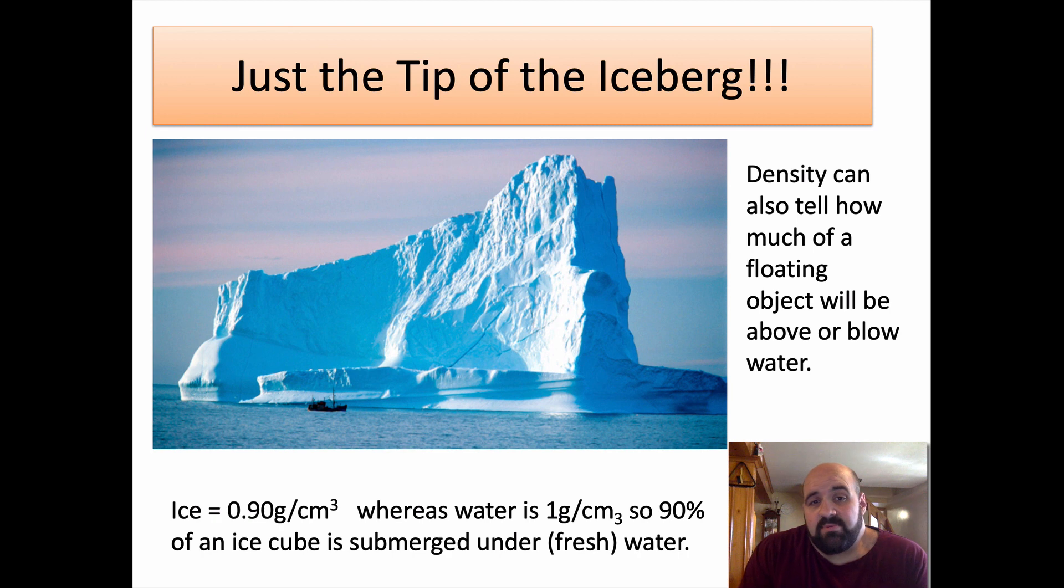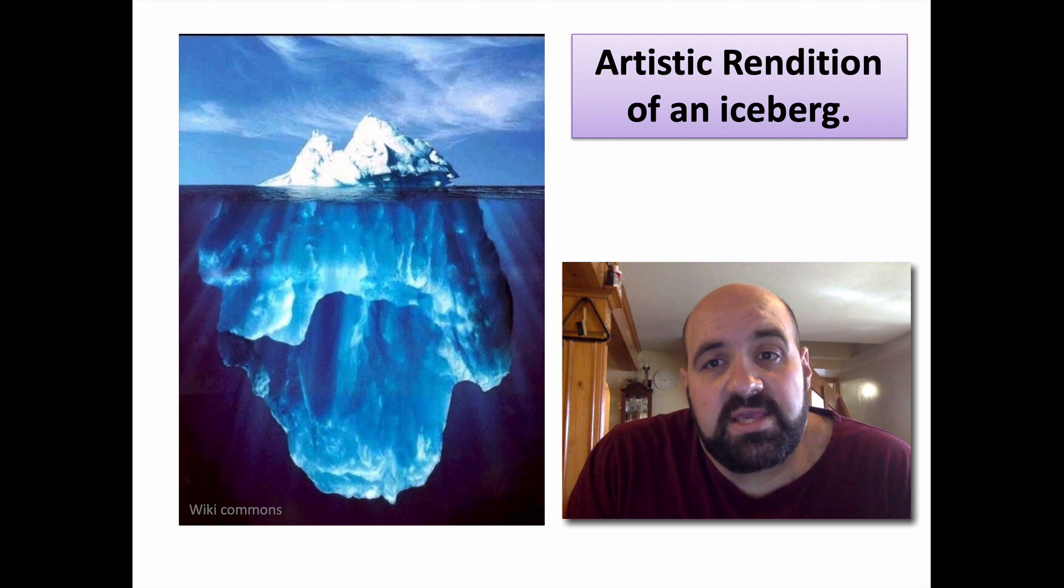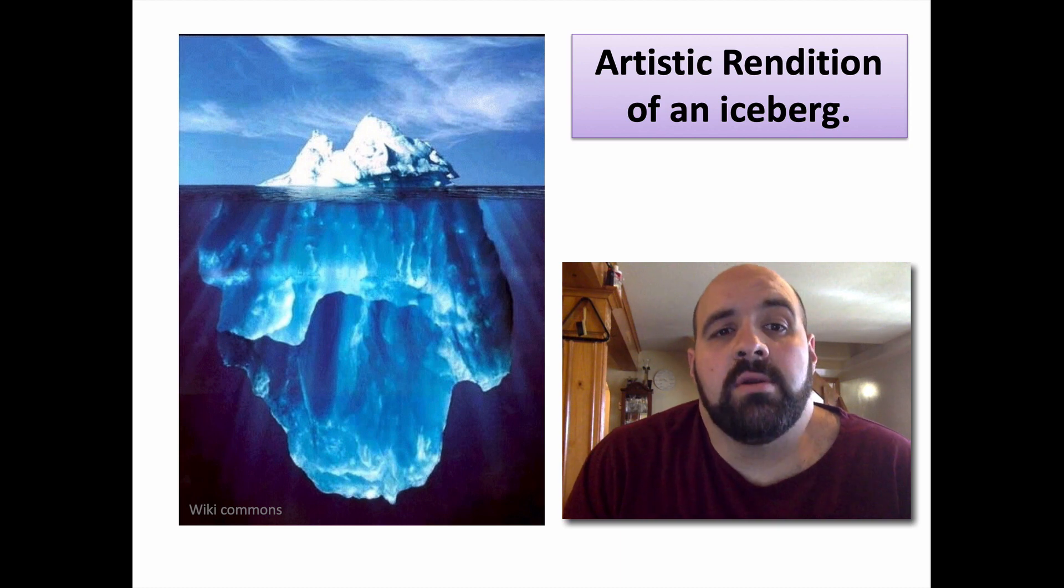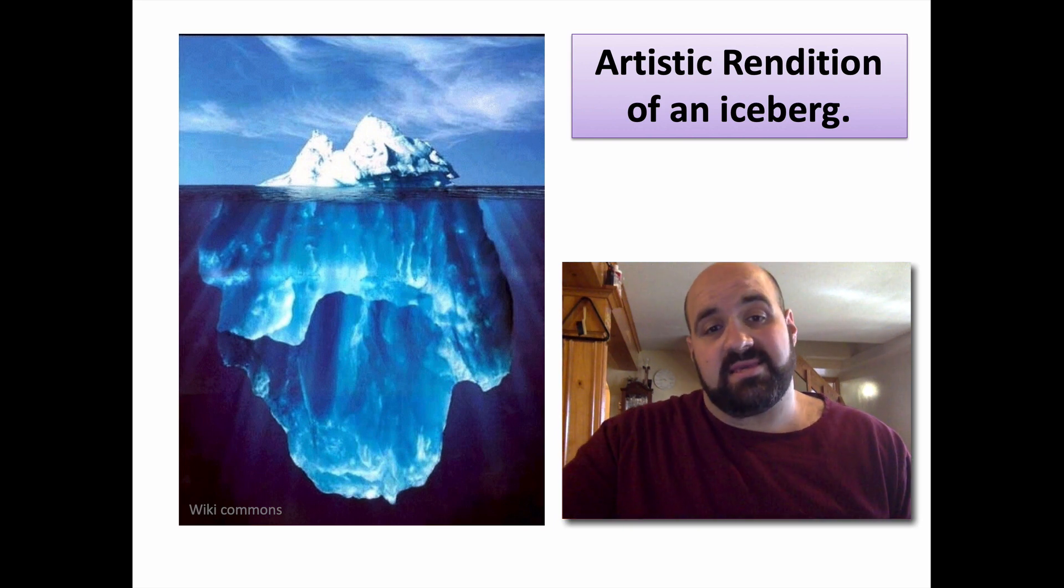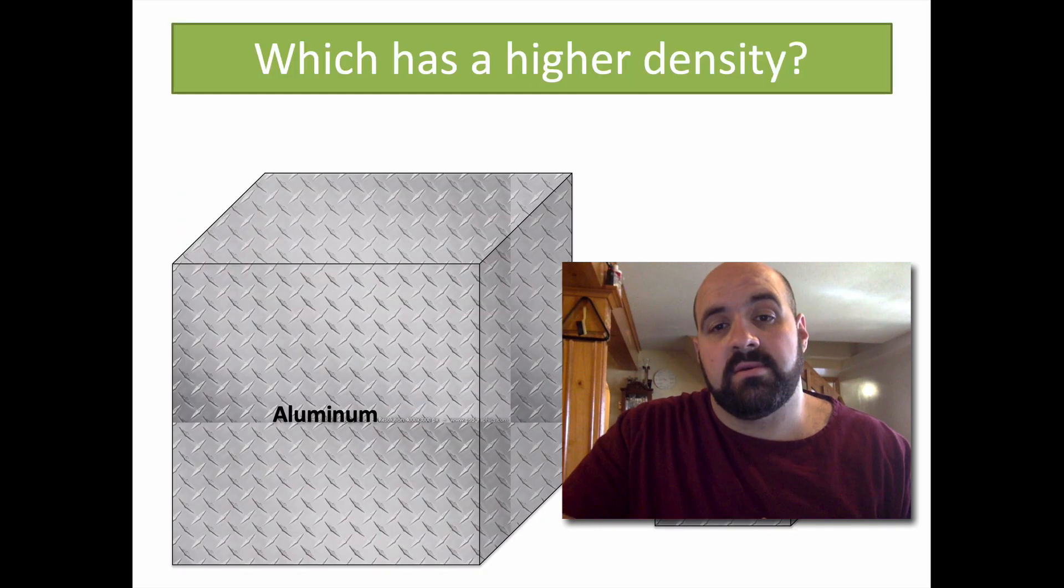And also, I did want to point out water is one gram per centimeter cubed or one gram per milliliter. That means if you had a gram of water, it would take up one milliliter of space. If you had 30 grams of water, it would be 30 milliliters. If I filled this to 80 milliliters, that means there's 80 grams of water in there. Water has a one-to-one ratio, which is very useful when we're doing things in science. And you've probably heard of the expression, just the tip of the iceberg. This expression takes its root in reality, in physics. Density can tell us how much of a floating object will be above or below water. Ice has a density of 0.90. Remember, water has a density of one. So 0.90 means that 90% of an ice cube is submerged under fresh water. And that's a perfect relationship. If ice had a density of 0.80, 80% would be there. More on this in the next slide. But that does mean about 90% of an ice cube is submerged underwater.